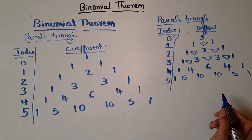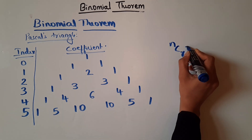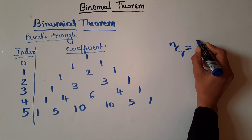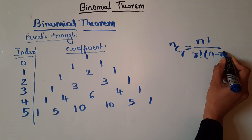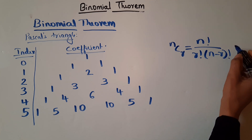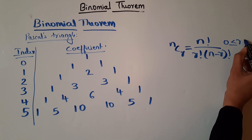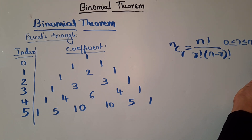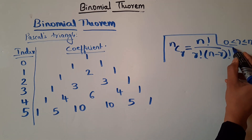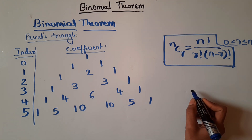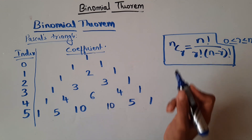We all know the formula for nCr: nCr = n! / (r! × (n−r)!), where r ≥ 0 and r ≤ n. So now let's see how to rewrite Pascal's triangle by using the concept of combination.